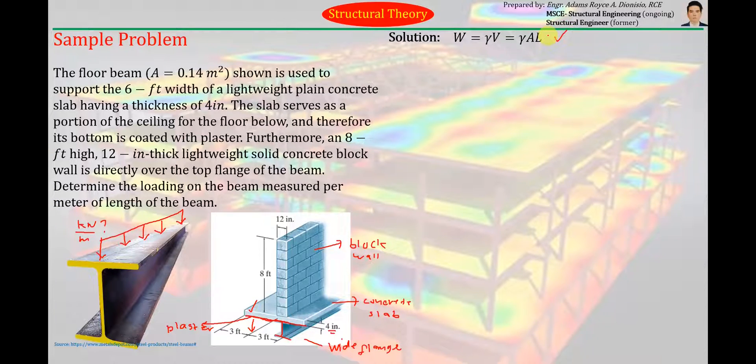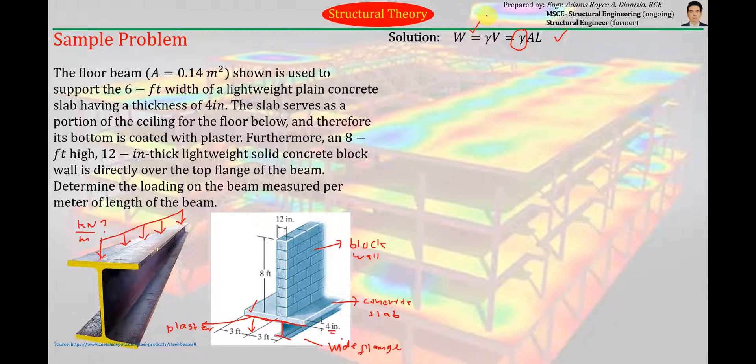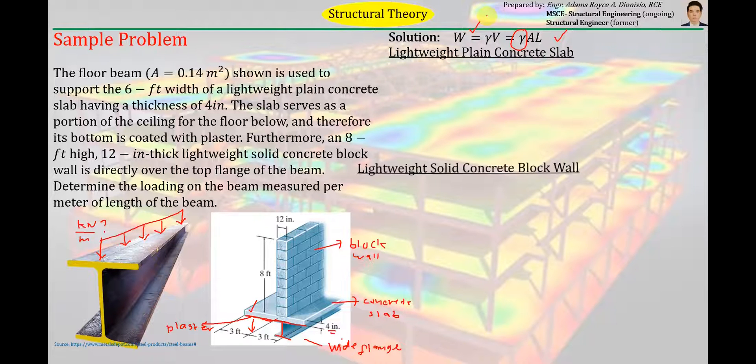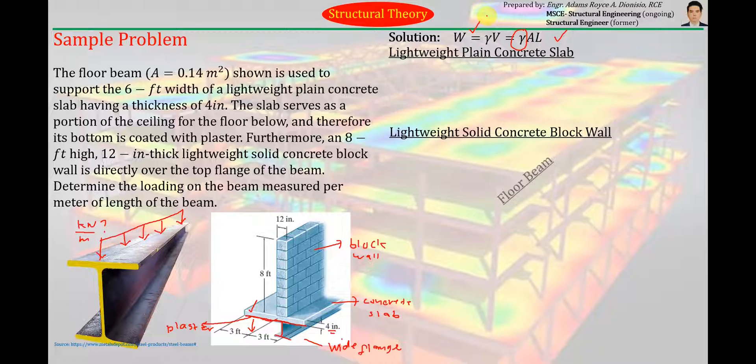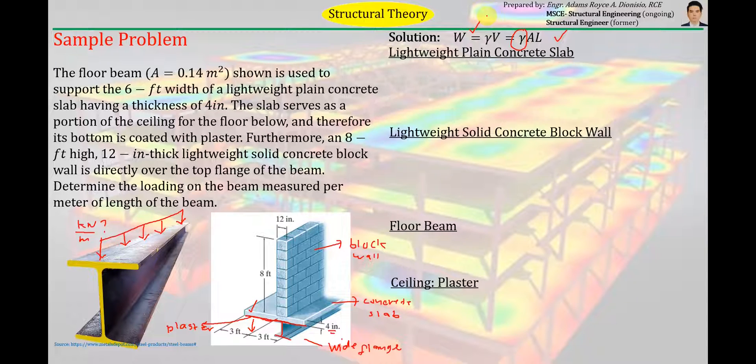As long as we know the unit weight, we can already compute for the weight of the member. So we just have to find the corresponding unit weight of the given members or materials, the lightweight plain concrete slab, lightweight solid concrete block wall, the floor beam, and the ceiling or plaster. Although there will be other treatment for the ceiling or plaster because it is a dead load applied to a surface. So medyo, hindi ko ito yung gagamitin natin na formula for that.